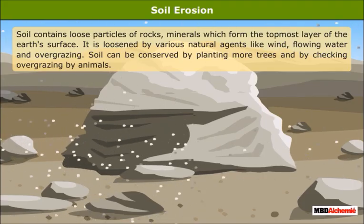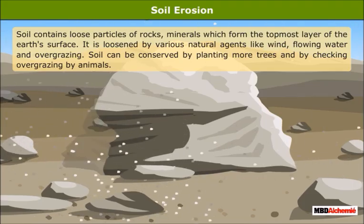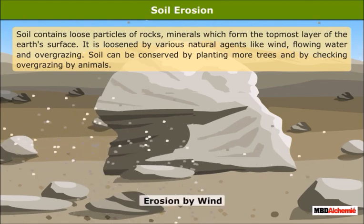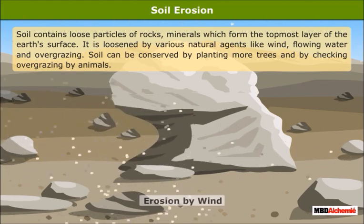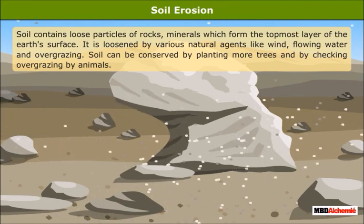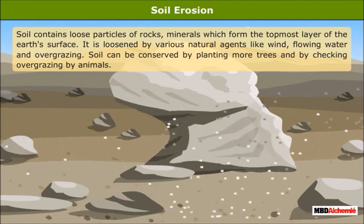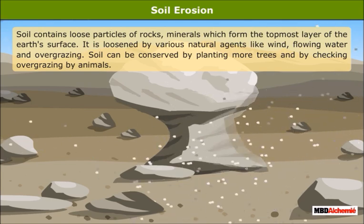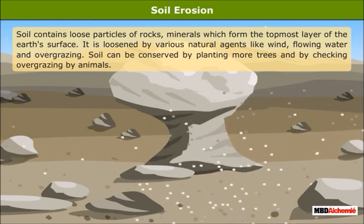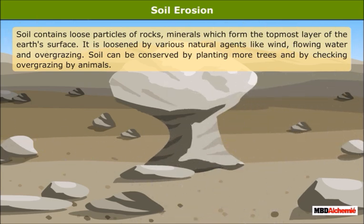Soil contains loose particles of rocks and minerals which form the topmost layer of the earth's surface. It is loosened by various natural agents like wind, flowing water, and overgrazing by animals, which causes soil erosion. Soil can be conserved by planting more trees and by checking overgrazing by animals.